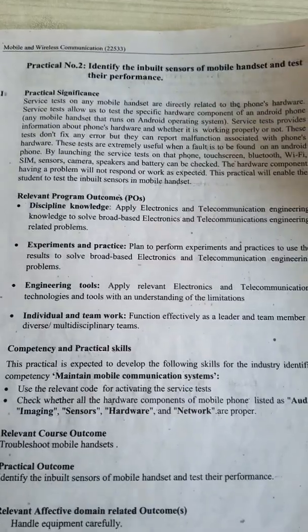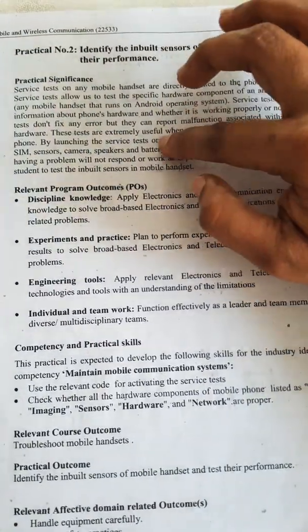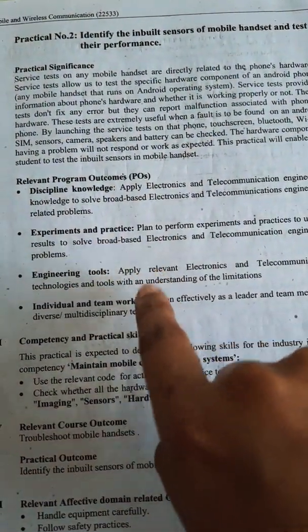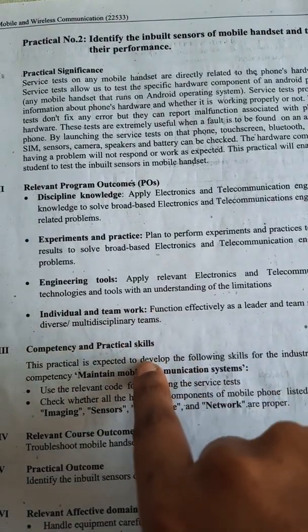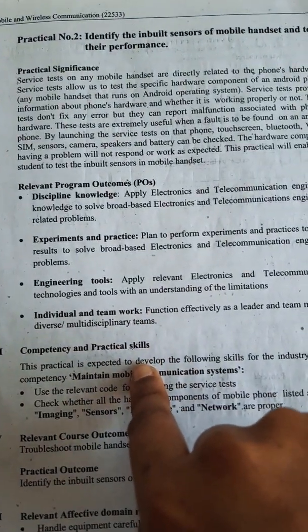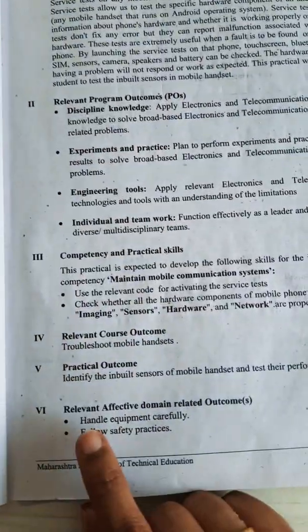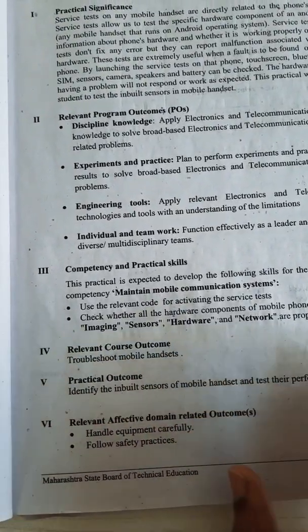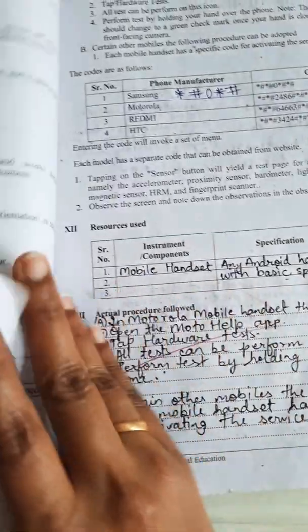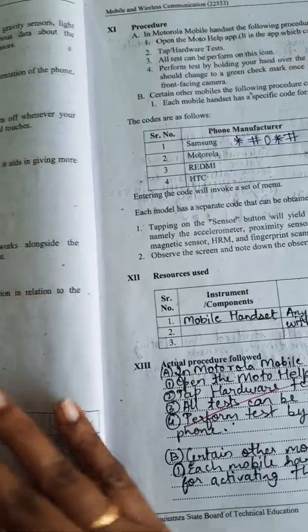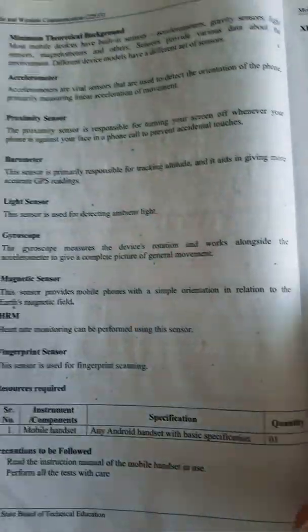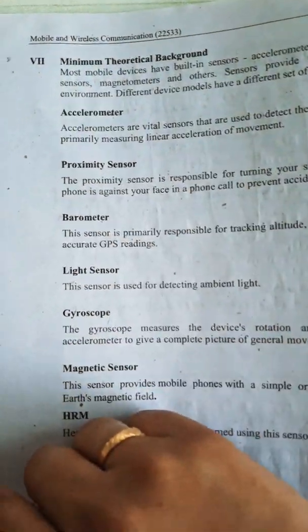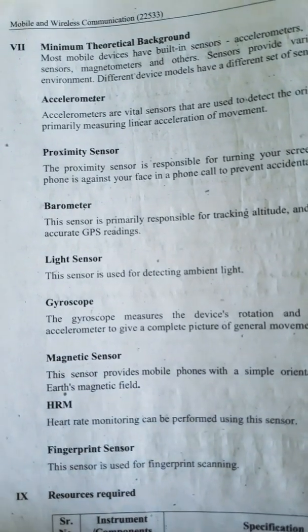This is experiment number two, where you study the POs — discipline knowledge, experiments and practice, engineering tools, individual teamwork. The course outcome is to troubleshoot the mobile handset, and the learning idea is that you will be able to identify the different sensors in the handset.